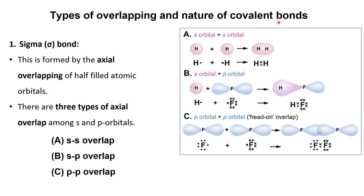A covalent bond is basically of two types: sigma bond and pi bond. The type of covalent bond depends upon the type of overlapping. A sigma bond is formed by the axial overlapping between half-filled atomic orbitals. This axial overlap is of three types: SS overlap, SP overlap, and PP overlap. SS overlap means the overlapping between two s orbitals — for example, in the hydrogen molecule, where the two 1s orbitals overlap to form the H2 molecule.